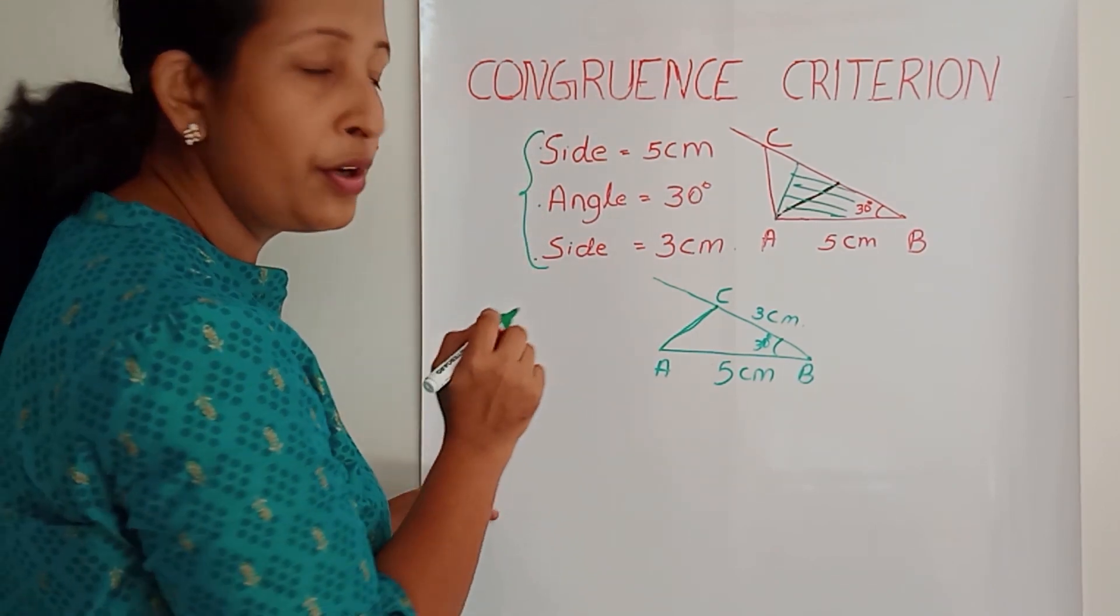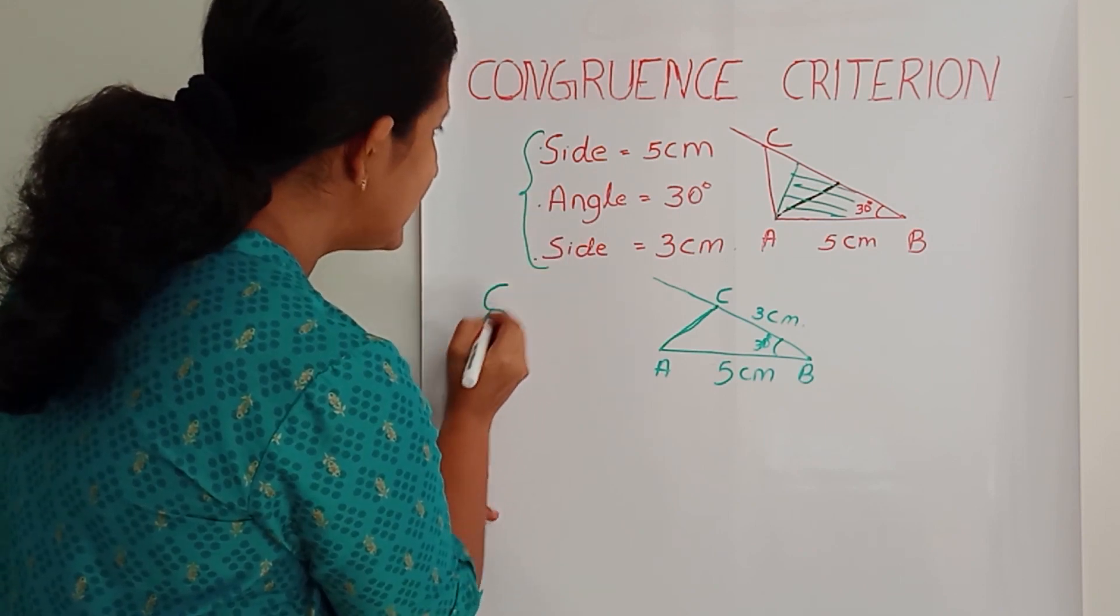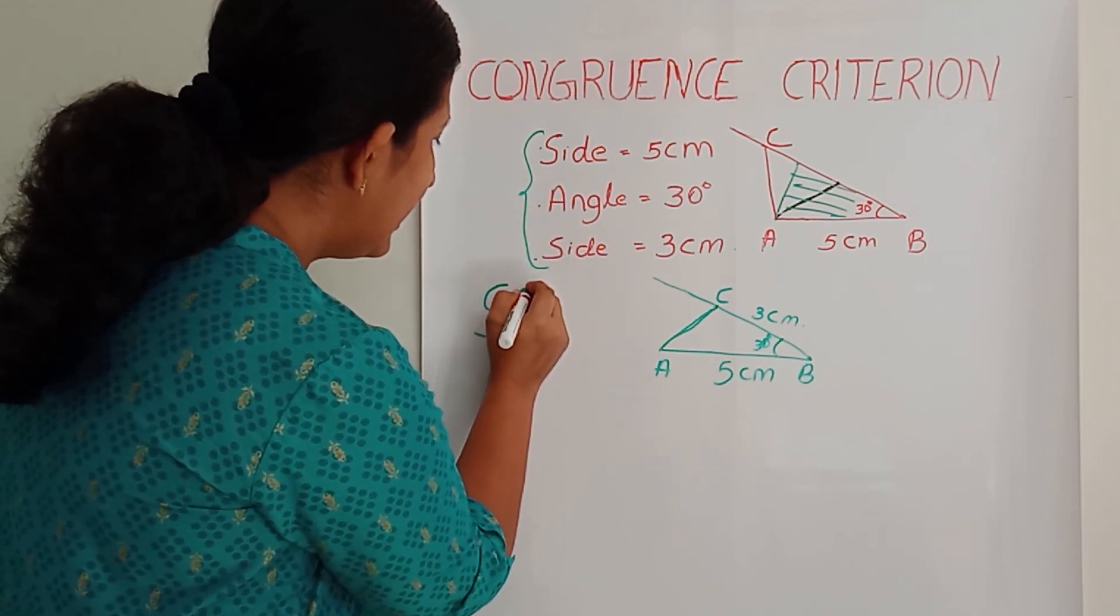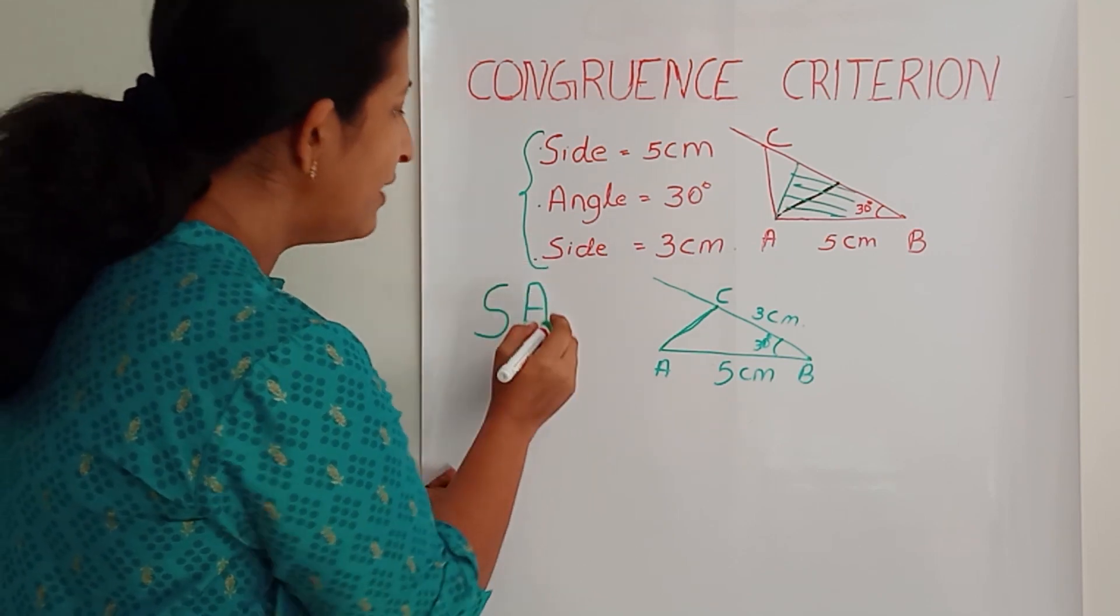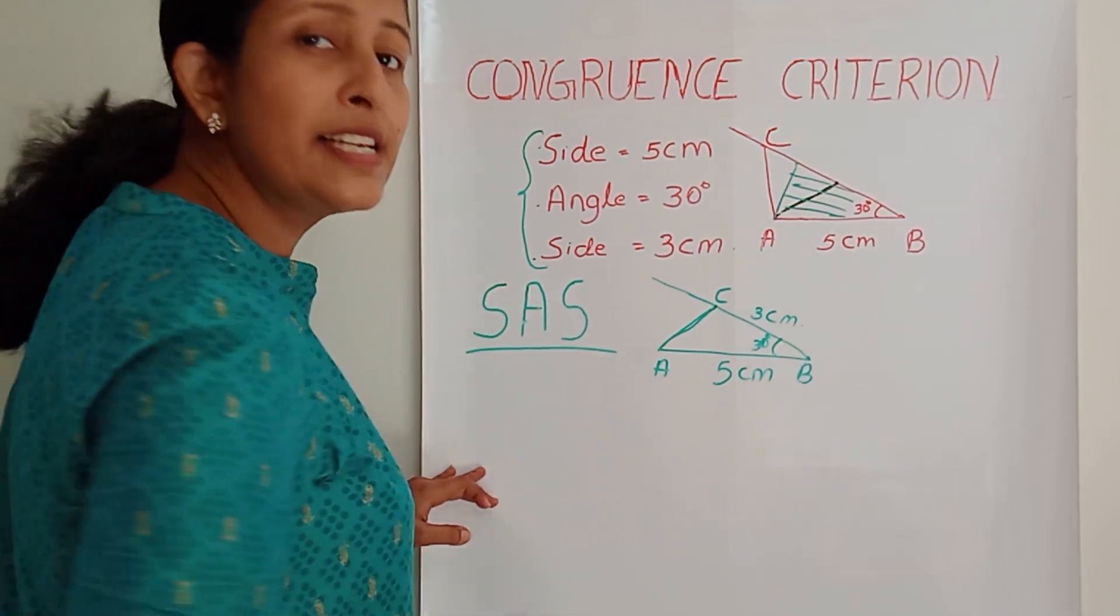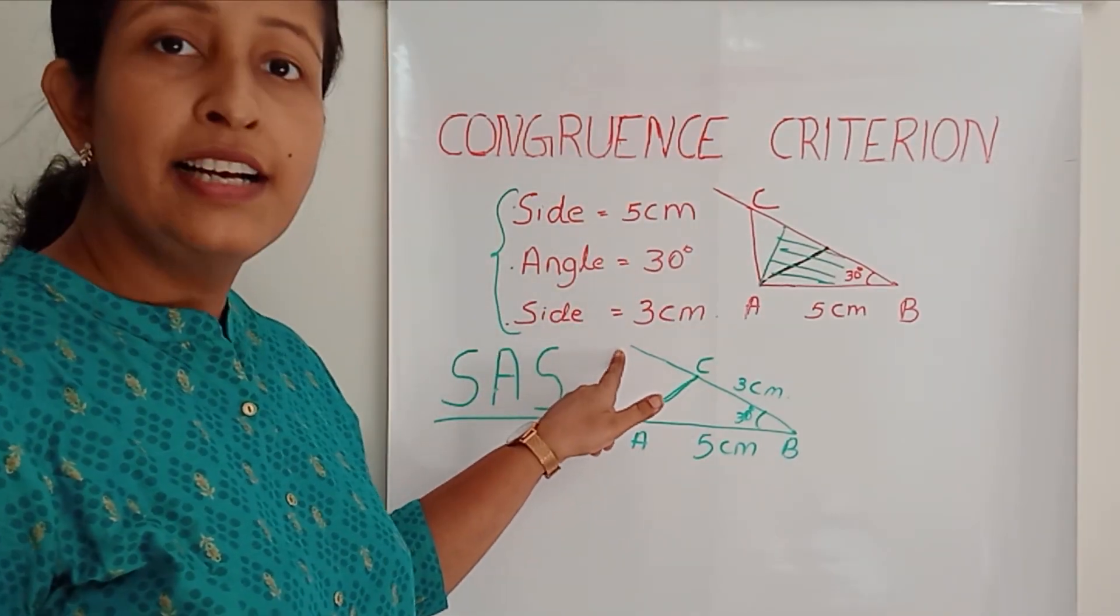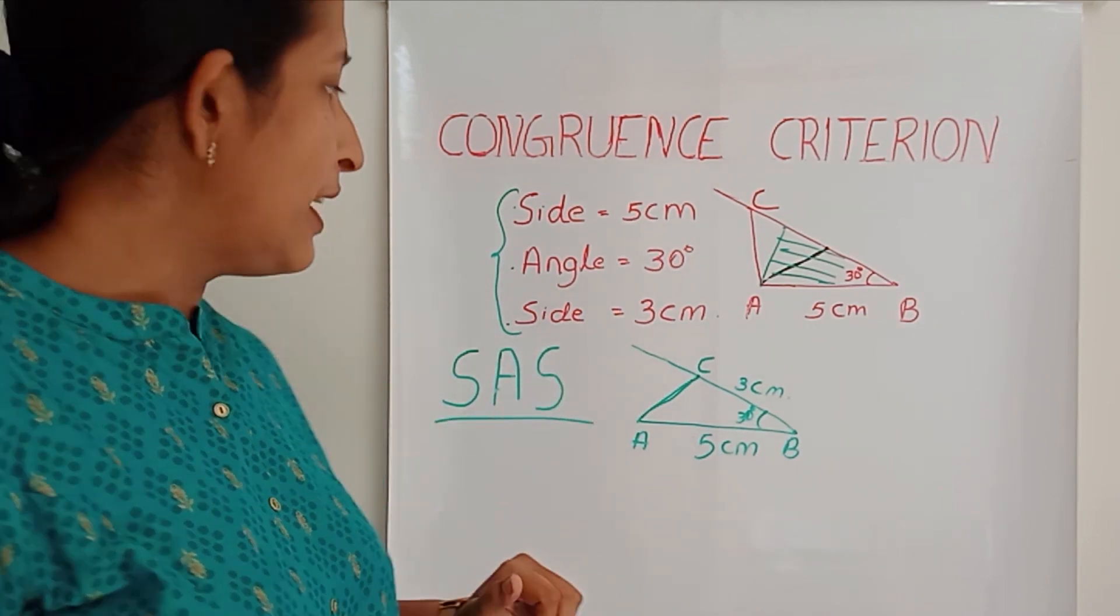So we will call this congruent criteria as side S, angle A, side S. SAS congruence criteria. By using three data, we can draw a congruent triangle.